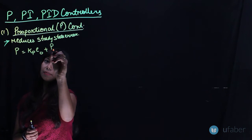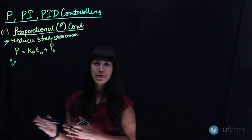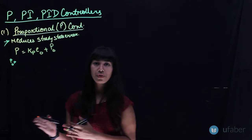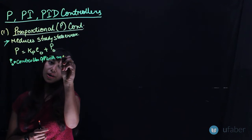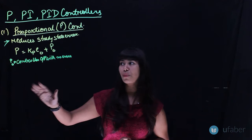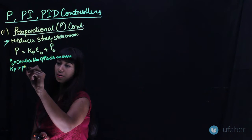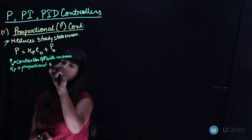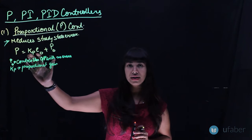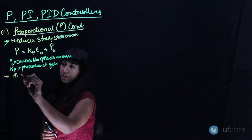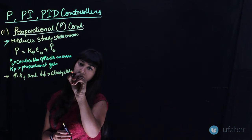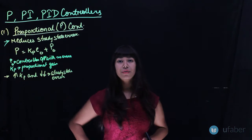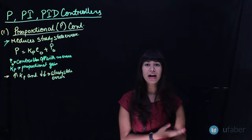The basic equation of a P type controller is: P = KP·EP + P₀, where P₀ is the controller output with no error, and KP is the proportional gain. What happens is when we increase our gain KP, we decrease our steady state error. The basic question is: why not increase KP to such a value that we have no steady state error at all?